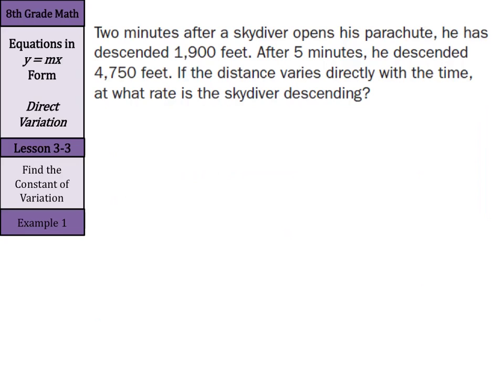We can solve this by looking at our feet over our time. If we look at the first one, we have two minutes and 1,900 feet. So this can be 1,900 feet over two minutes. But a word of caution here, this is descended. So we need to go negative because he's falling.